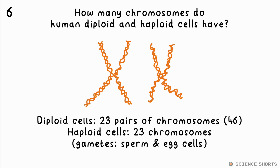How many chromosomes do diploid and haploid human cells have? Diploid means two sets of chromosomes — humans have 23 pairs, or 46 in total. Haploid cells just have one set, so that's just 23 chromosomes. These are your gametes: sperm and egg cells.